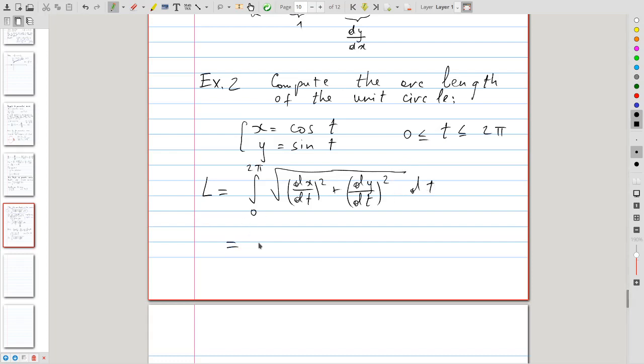And, this here becomes integral from 0 to 2π, dx/dt is the derivative of cosine, so that is negative sine of t, squared, plus derivative of y with respect to t, which is cosine, squared.